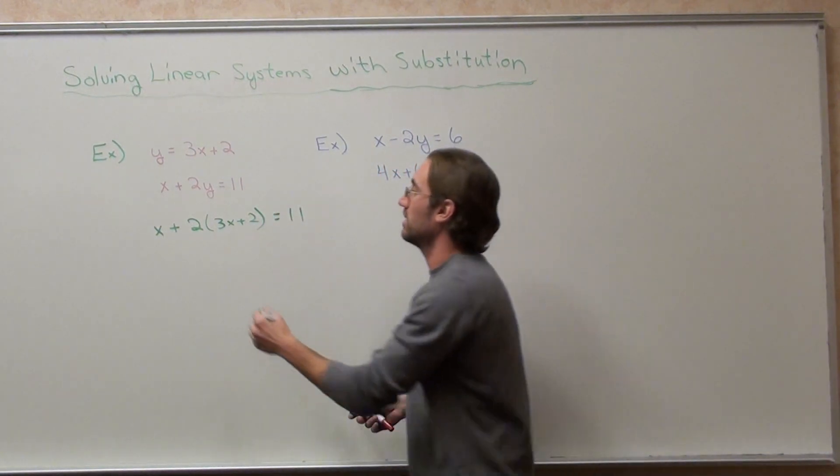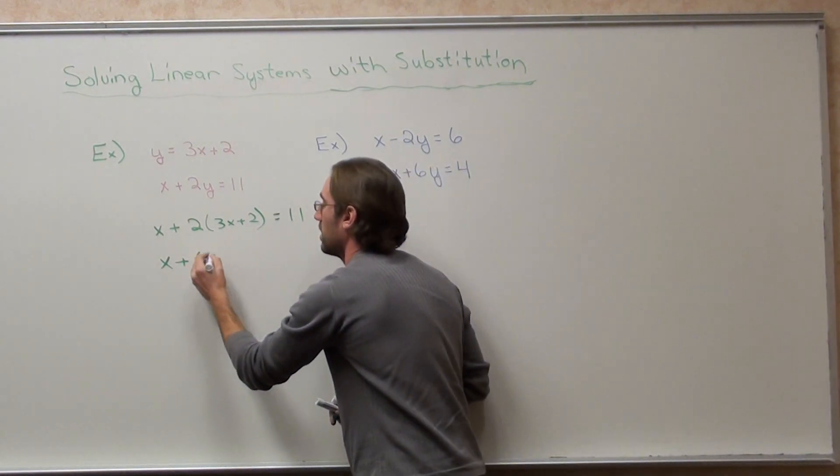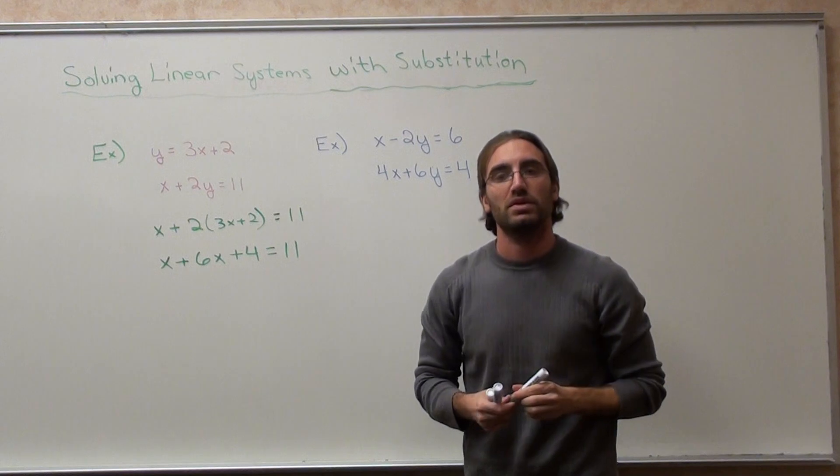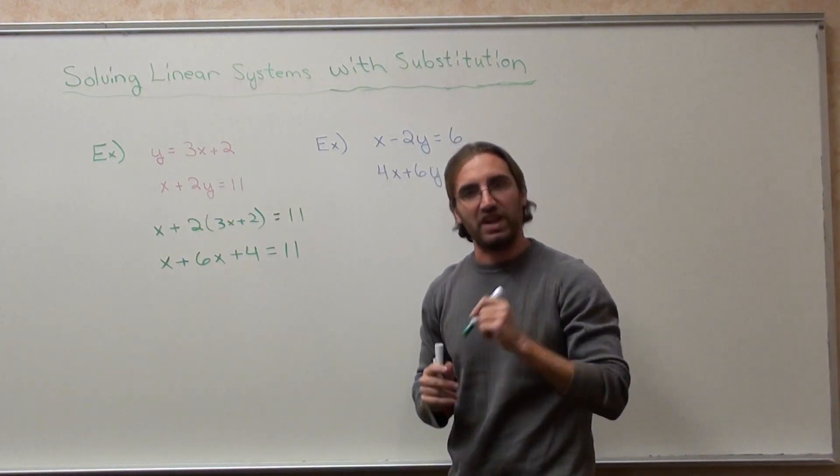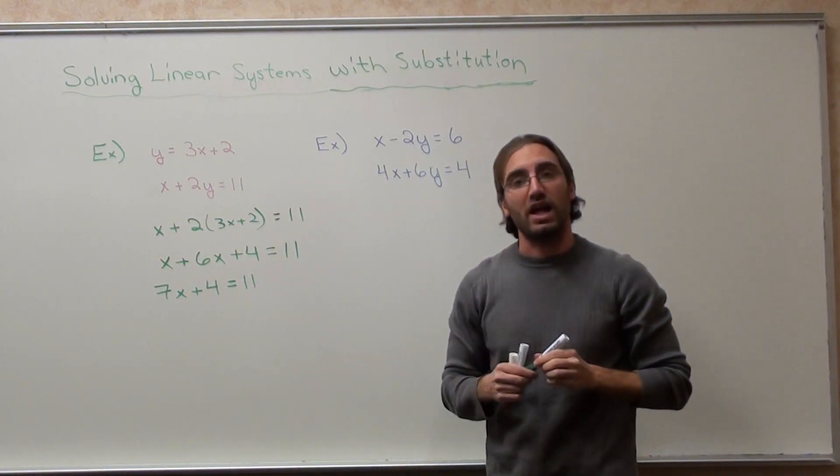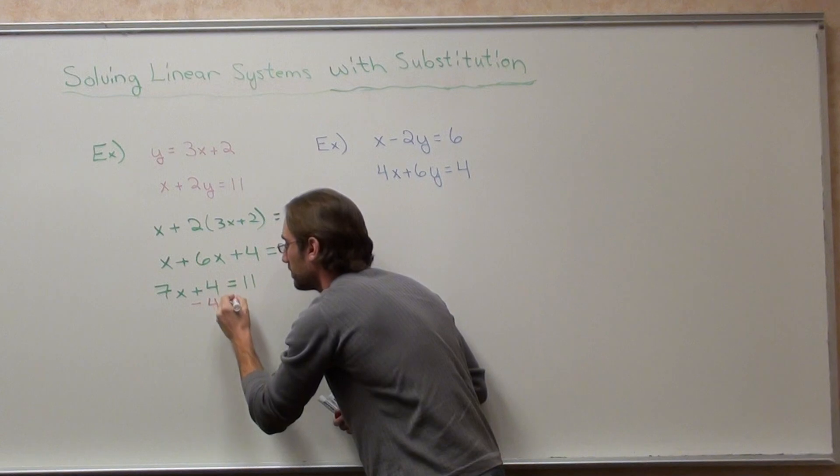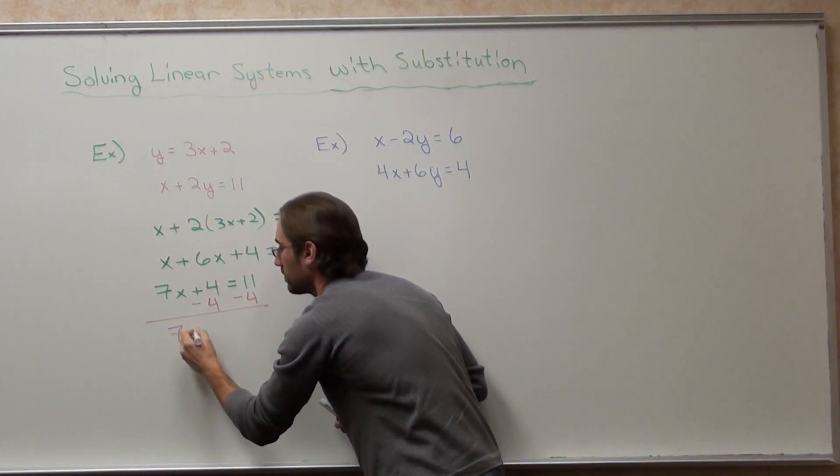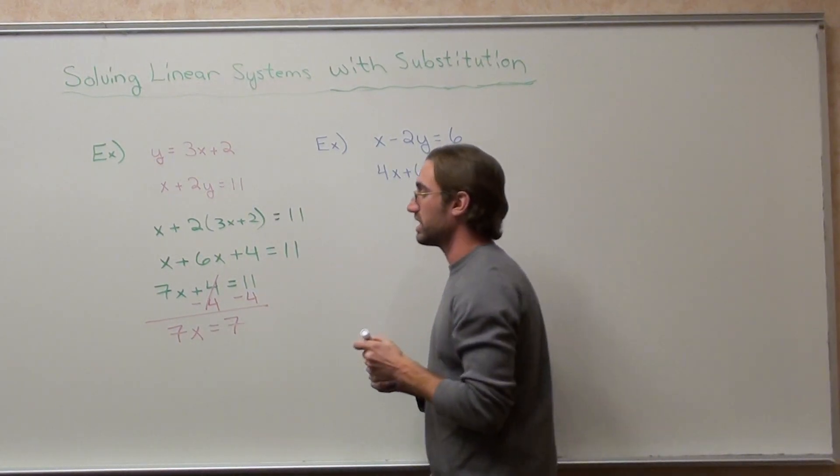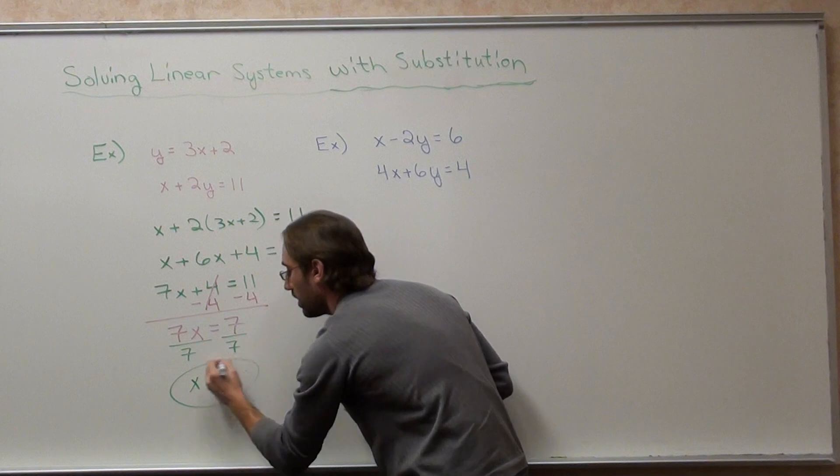Now, all you do is you solve for x. x plus 2 times 3x is 6x. 2 times 2 is 4. Equals 11. 1x plus 6x is 7x. Plus 4 equals 11. Then subtract 4 on both sides. And then divide 7. 7x equals 7. Or 7 times x equals 7. Now, divide by 7 on both sides. x equals 1.